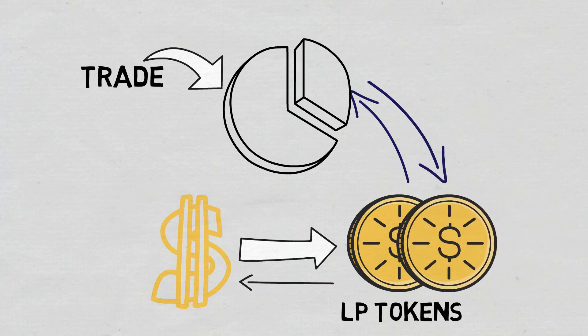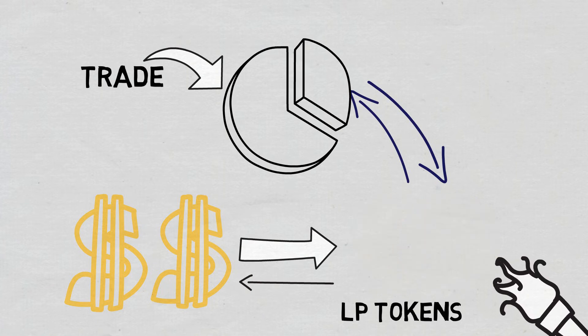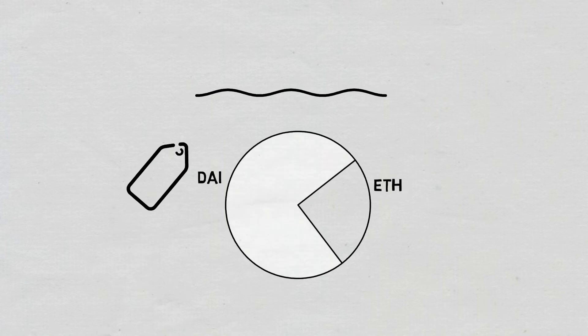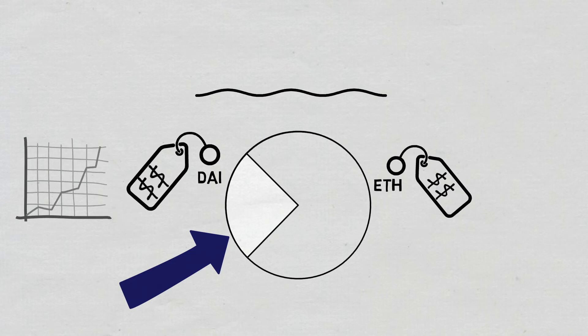In case a liquidity provider decides to get their underlying liquidity back, as well as any accrued fees, they must burn the LP tokens they hold. The ratio of the tokens in the liquidity pool dictates the price of assets. So, for example, when you buy DAI from the DAI-ETH pool, the supply of DAI is reduced while the supply of ETH is increased proportionally. This will further lead to an increase in the price of DAI and a decrease in the price of ETH.